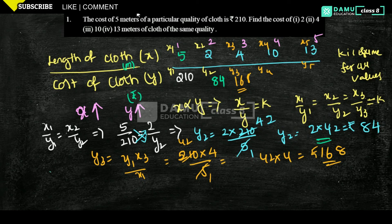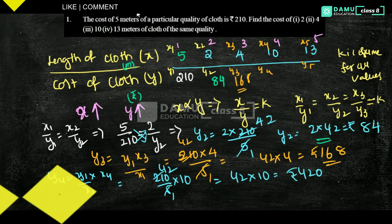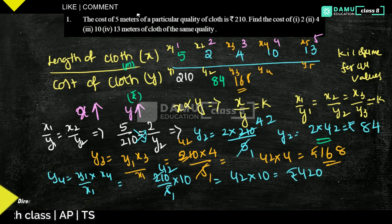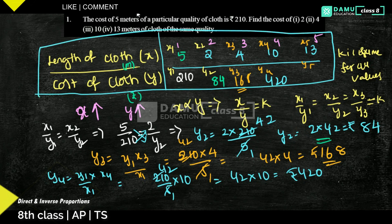For Y4, using Y1 by X1 into X4: that is 210 by 5 into 10, which gives 42 into 10. So Y4 equals 420 rupees. The cost of 10 meters of cloth is 420 rupees. It is better to organize these values in a box-type table for easy reference.